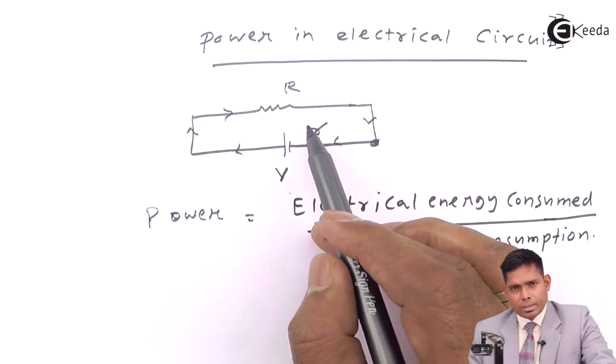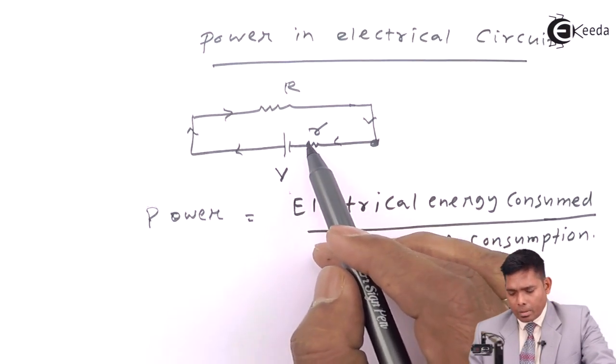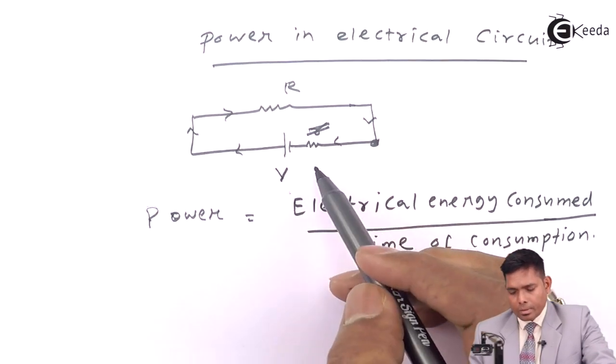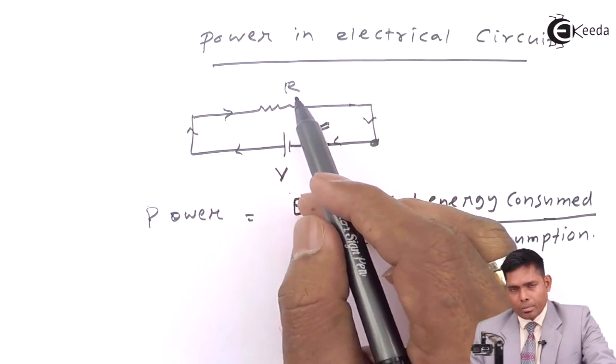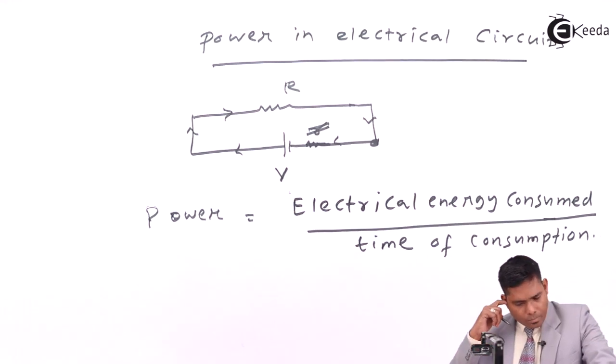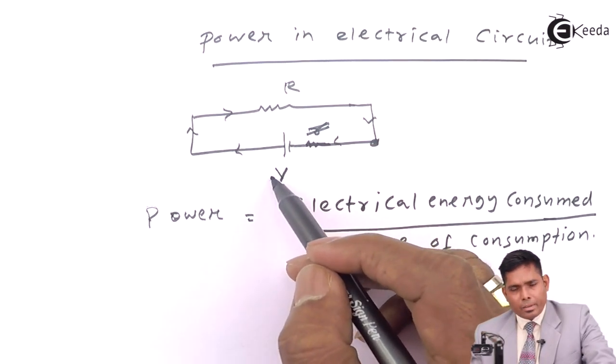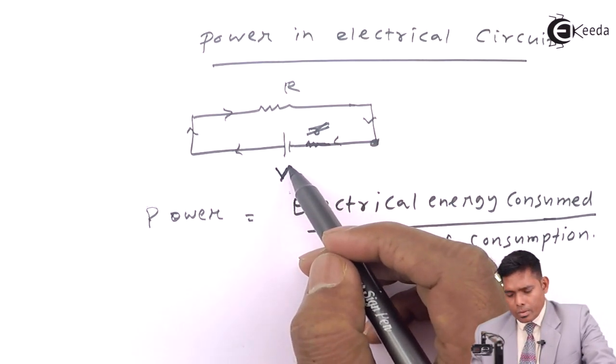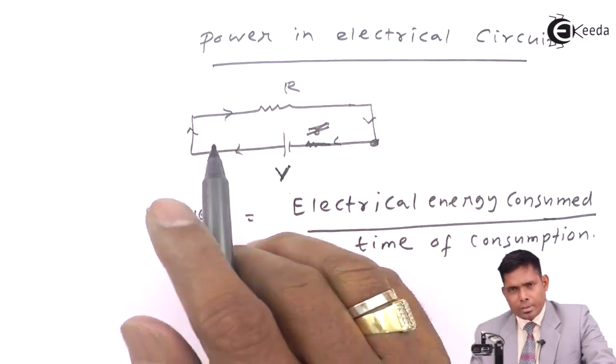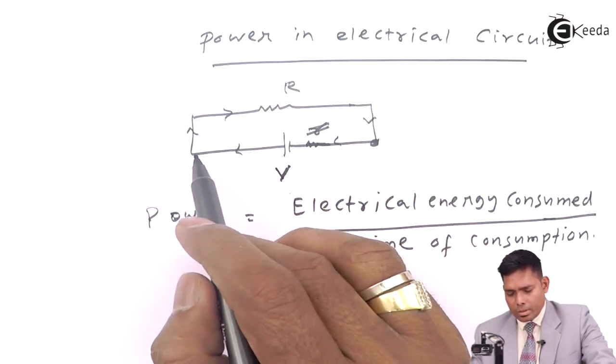For the time being, I will not consider this. To make it very simple, I will not consider this. Suppose that there is only one resistance R over here, and the battery voltage is V. All the voltage will appear across the resistance because this is connected to this.